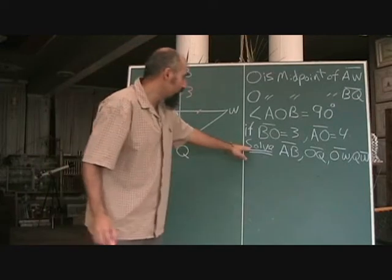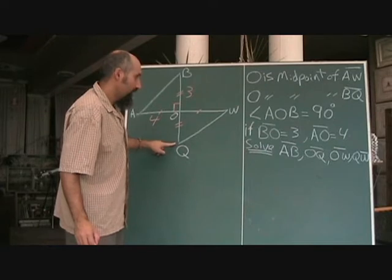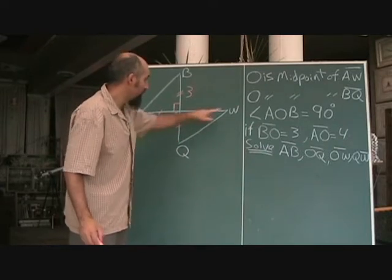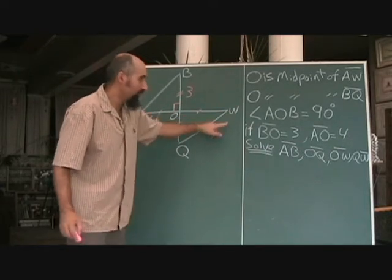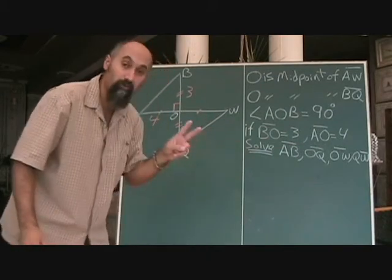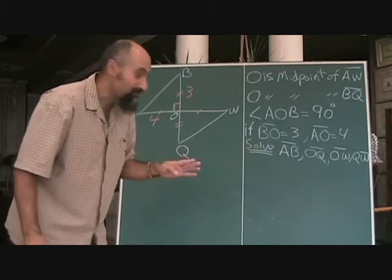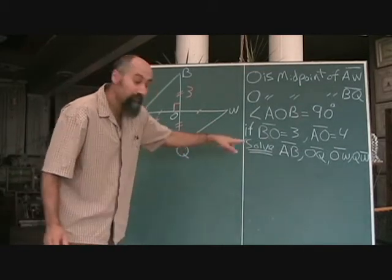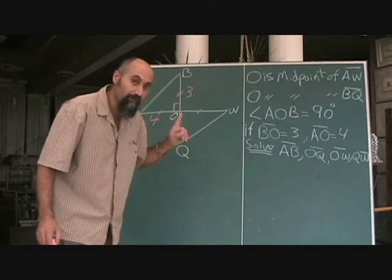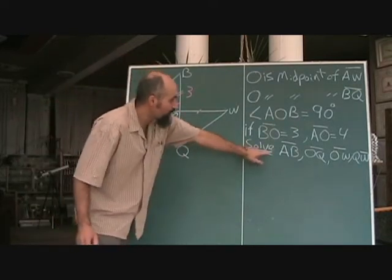Now they want us to solve AB, OQ, and OW, and QW. So there's four things that they want here from us. And this question will probably be worth two marks or four marks depending on how easy your teacher is. Now let's see what we can solve for first. They want to solve for AB.